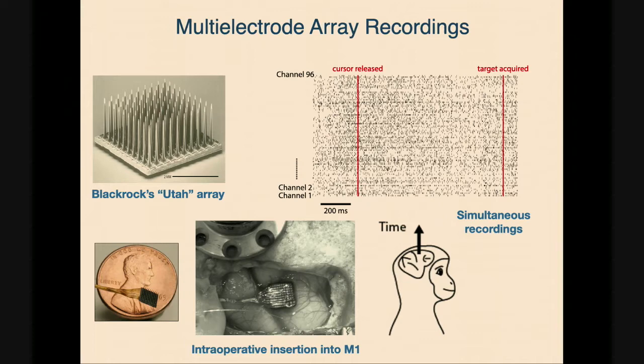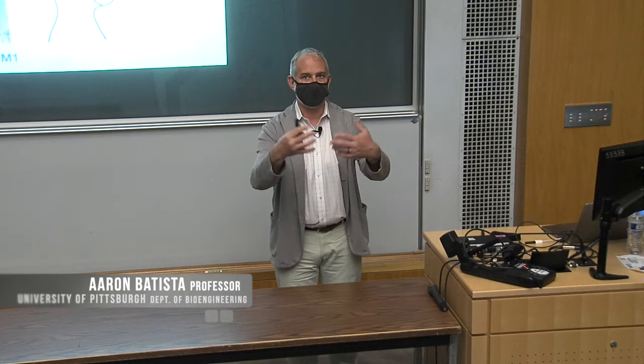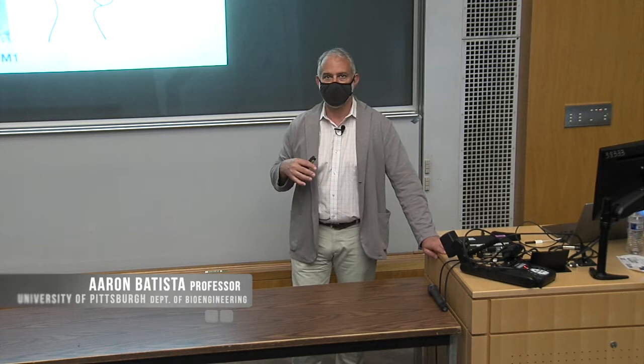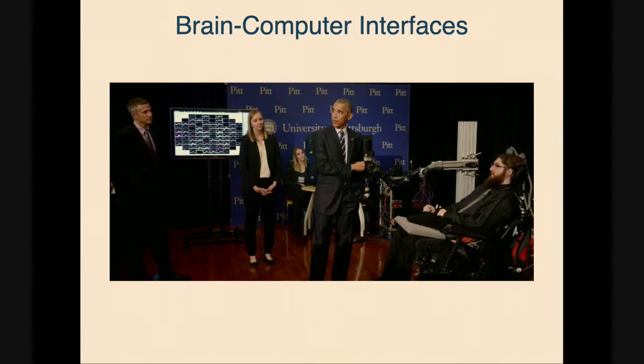Here is a Blackrock array implanted in the central sulcus — this is an intraoperative photograph, just anterior to primary motor cortex. With this device, we can record the activity of 96 channels. On some we get well-isolated single neuron action potentials; on others we get threshold crossings that represent the aggregate activity of nearby neurons. We gloss that distinction and take all the neurons together for everything I'll show you. The Utah array was pivotal in the development of human clinical BCI trials, which hopefully many of you have encountered already.